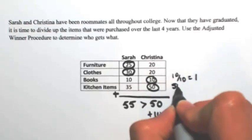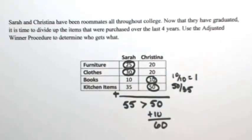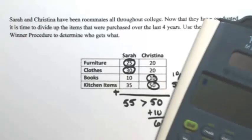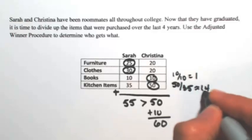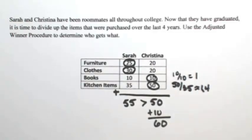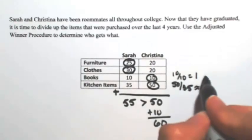For the kitchen items, we have 50 over 35. So dividing that, we get about 1.4. So what we're going to do is split up the item that they want about the same. The closer you are to 1, the closer that you are with your points. So 10 to 10 is exactly 1. So this is the item that we're going to split.